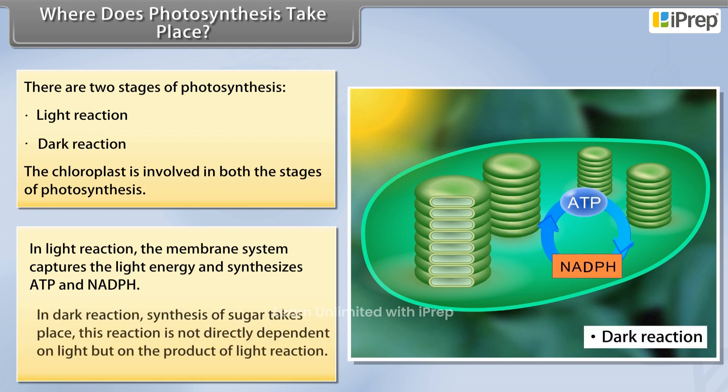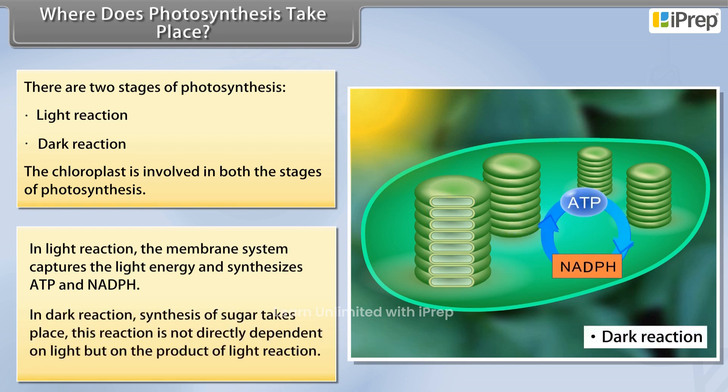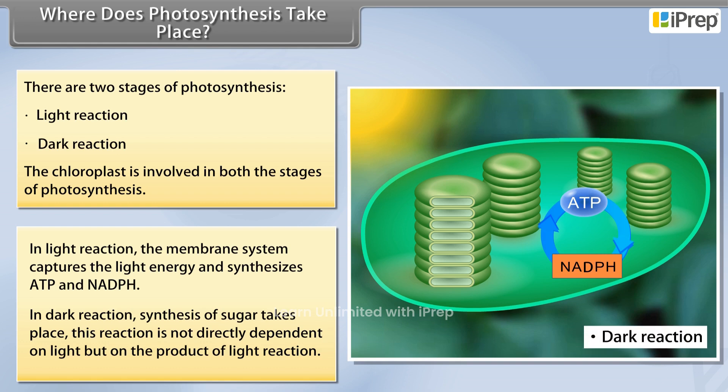Whereas in dark reaction, synthesis of sugar takes place. This reaction is not directly dependent on light, but on the products of the light reaction.